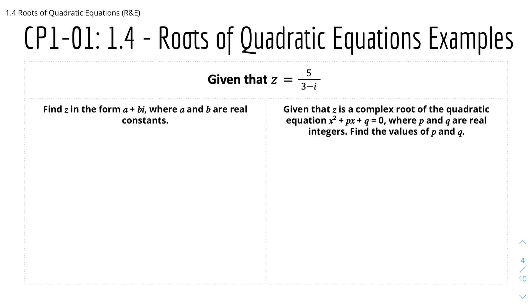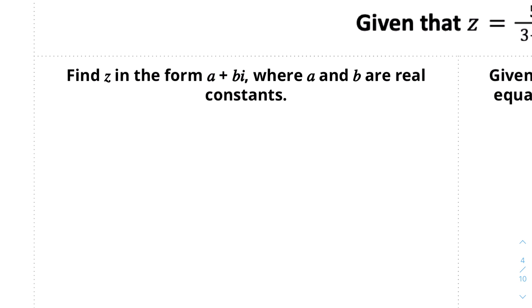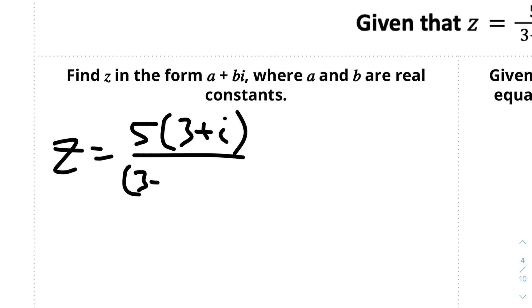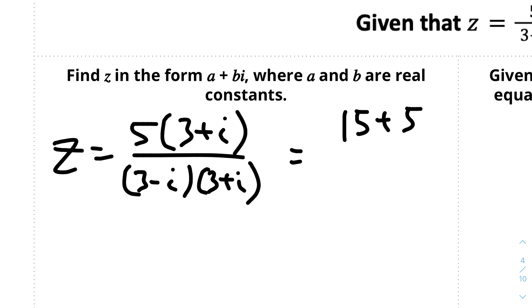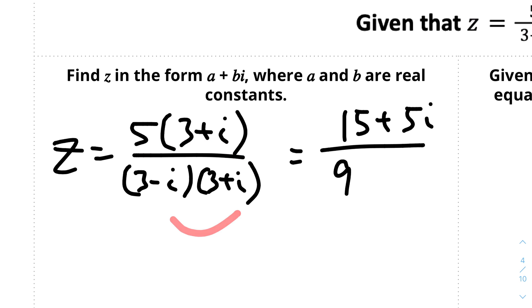Here are some examples. Given that z = 5 / (3 − i), find z in the form a + bi where a and b are real constants. We find the complex conjugate of the denominator and multiply the top and bottom by it. The denominator is 3 − i, so the conjugate is 3 + i. So z = 5(3 + i) / [(3 − i)(3 + i)]. Multiplying by the conjugate eliminates the imaginary unit from the denominator. The numerator becomes 15 + 5i, and the middle terms in the denominator cancel out, leaving 9 + 1 = 10.